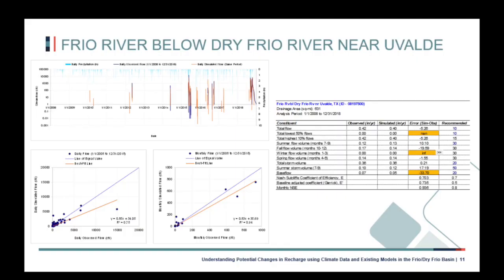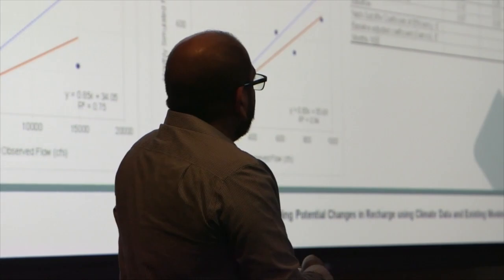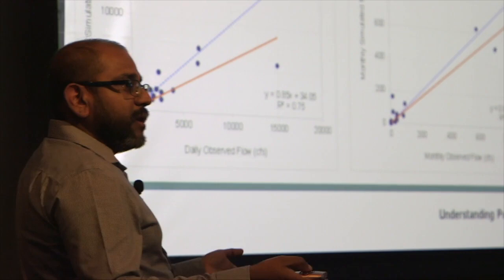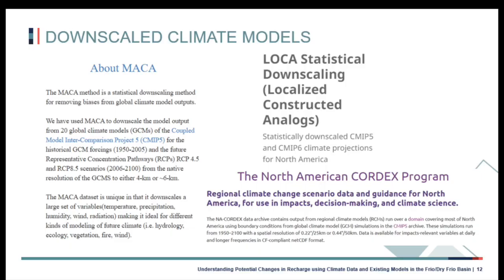That speaks to the point that a lot of the recharge in these basins is what's called focused recharge. At this point, looking at different lines of evidence, we believe the model was doing a reasonable job simulating historic conditions. We now have a calibrated model and can use it to predict what different aspects of the hydrological cycle would be based on different forcings — in our case, precipitation and evapotranspiration.